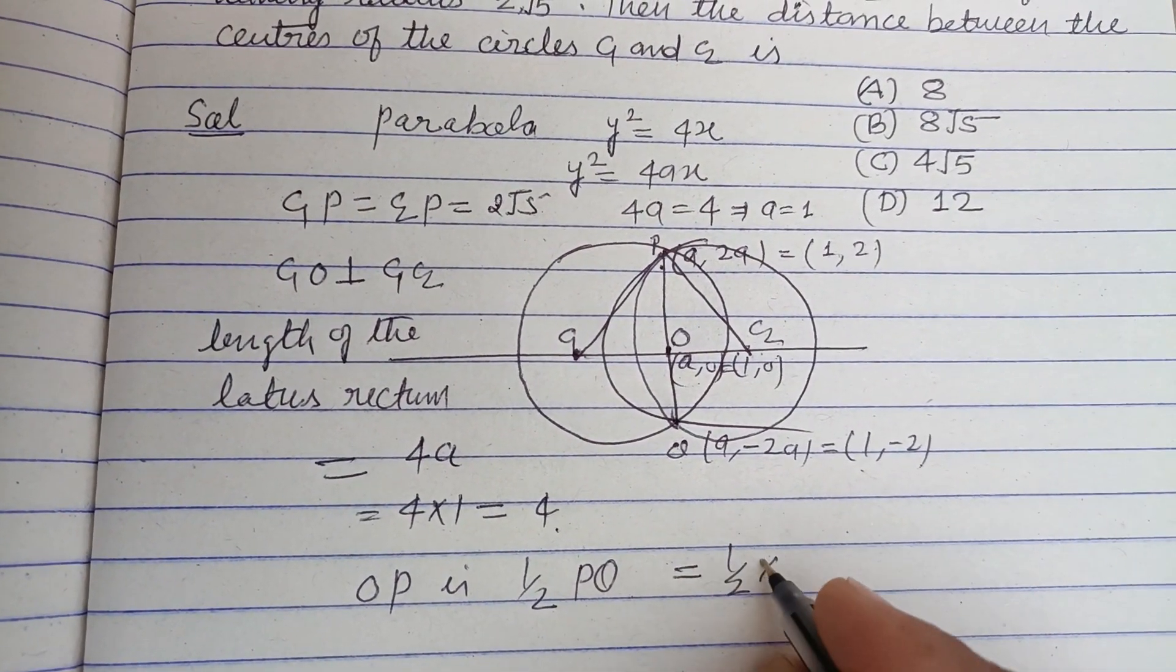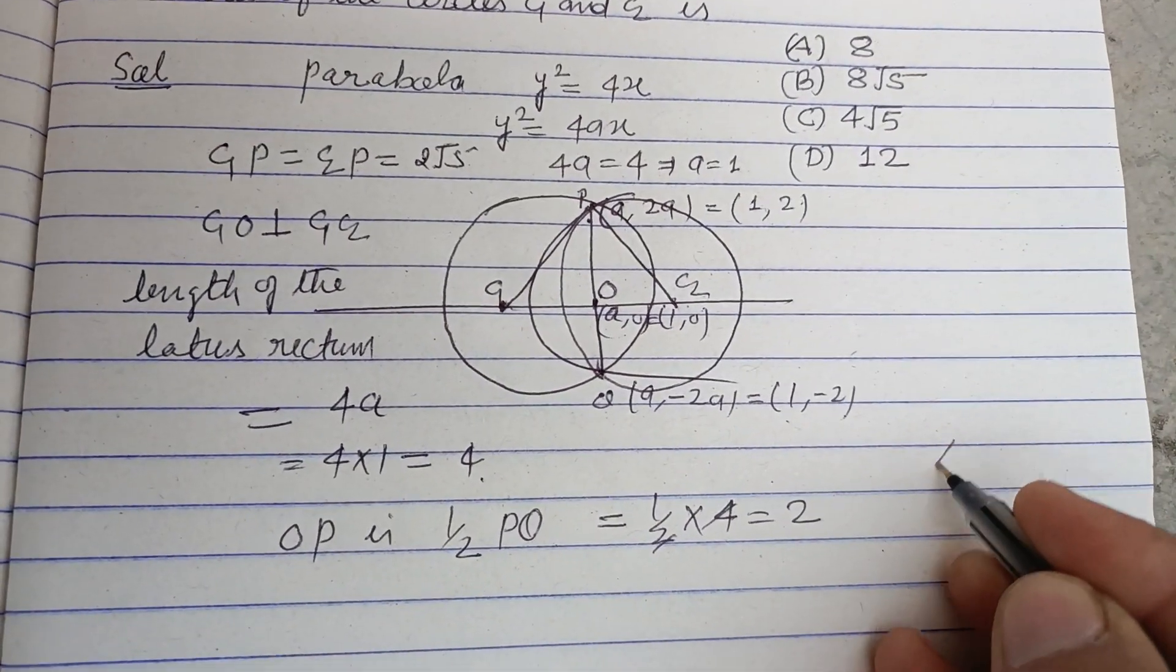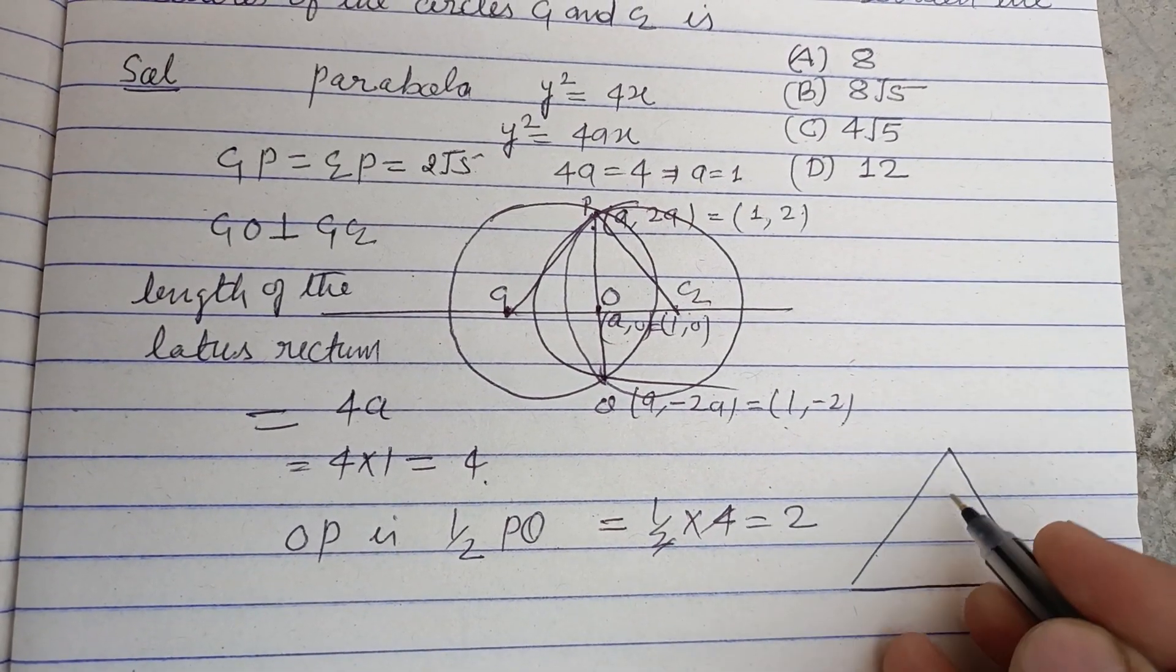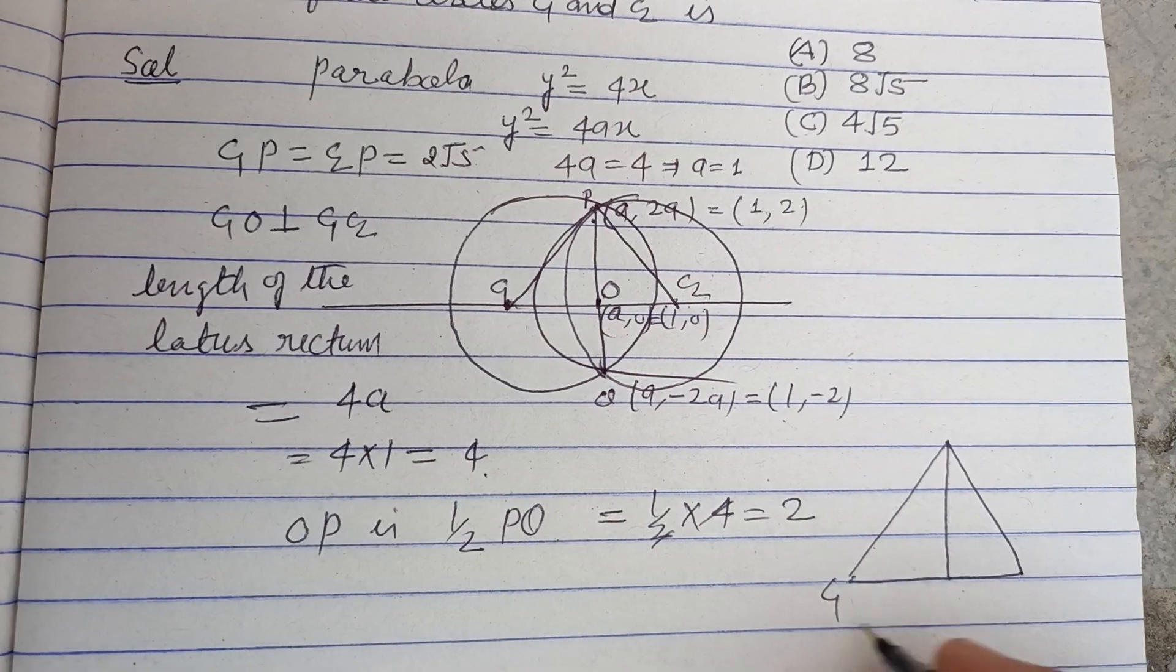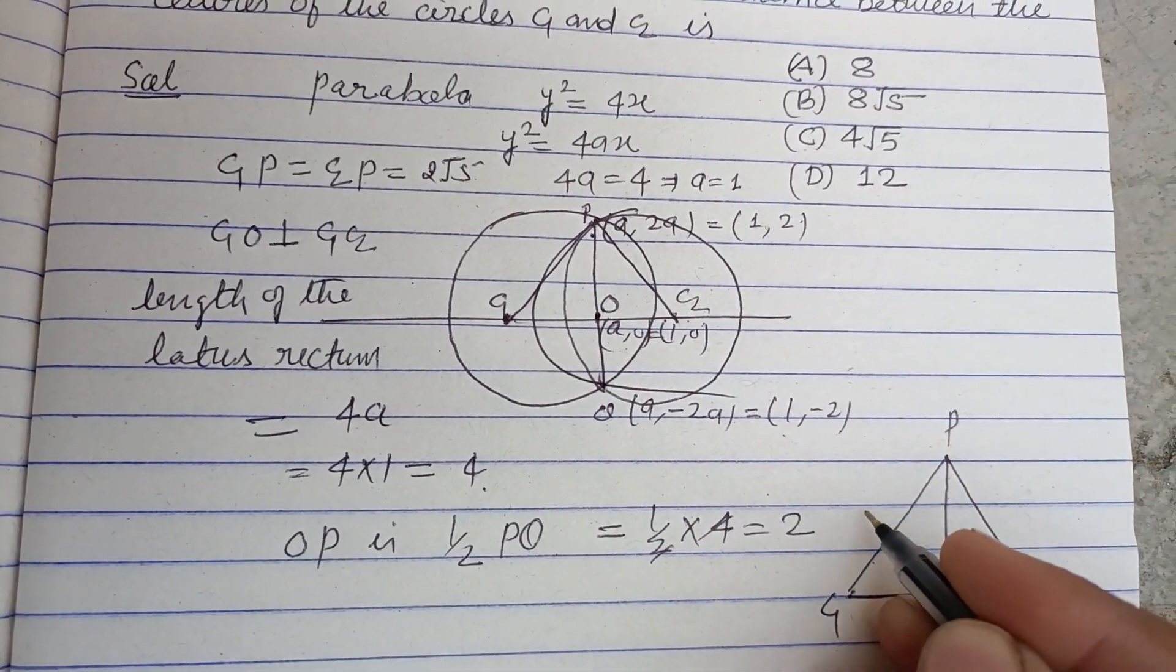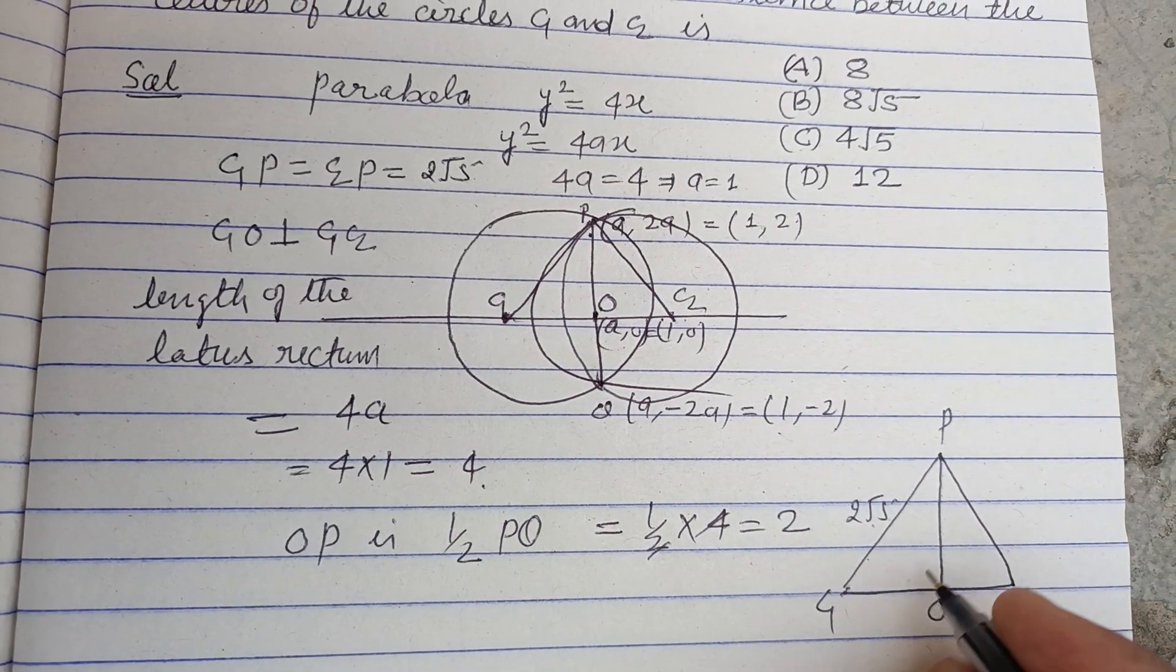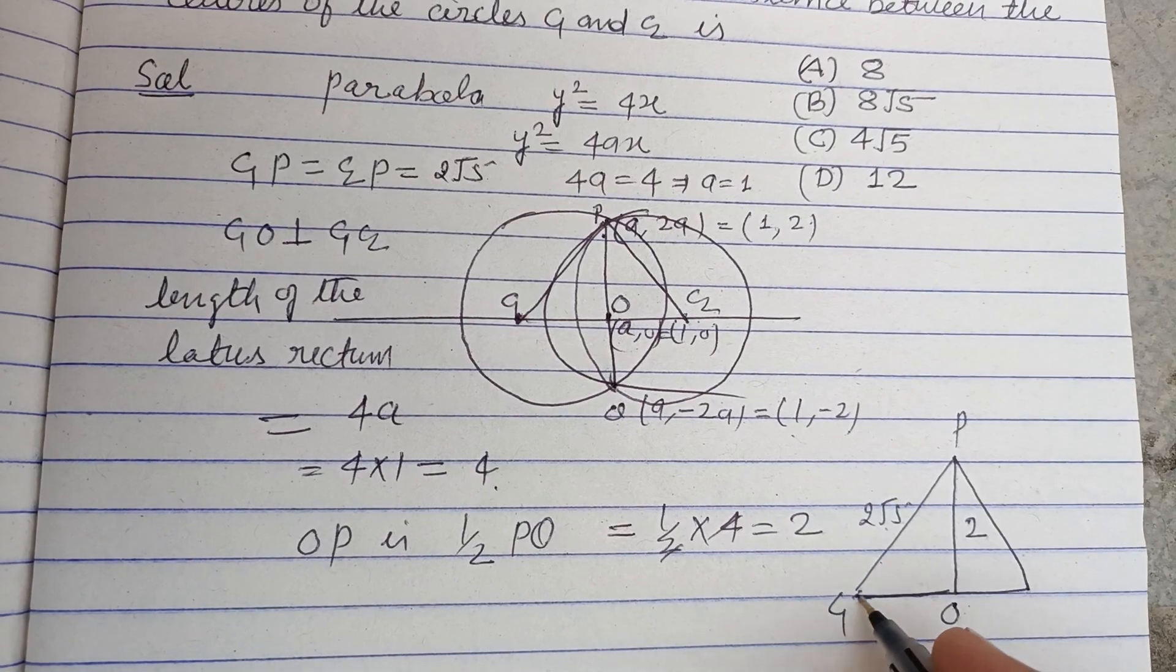So in right angle triangle C1OP, this is a right angle triangle. C1P is given as 2√5, and this is 2. Therefore we can easily find this.